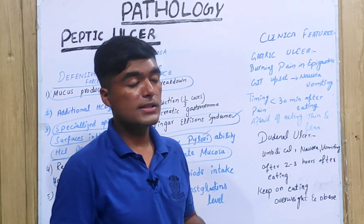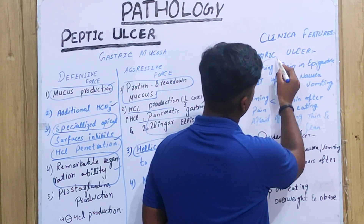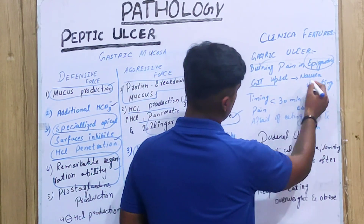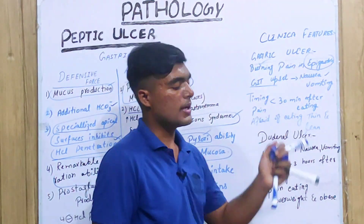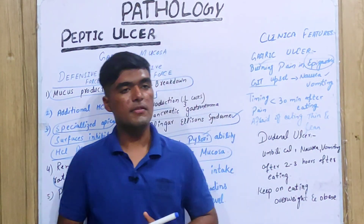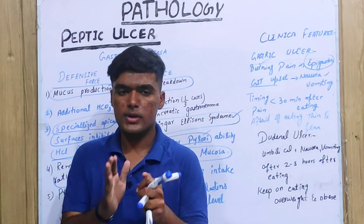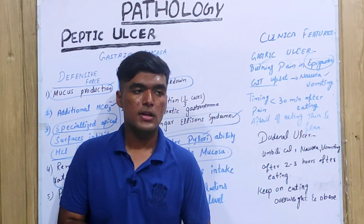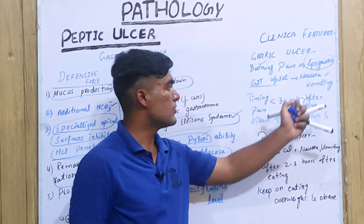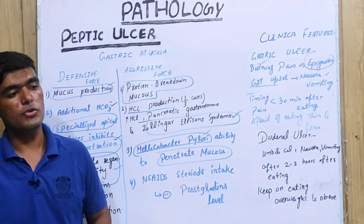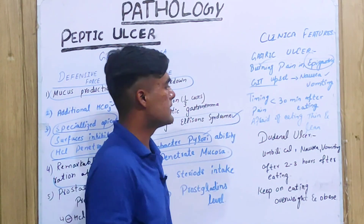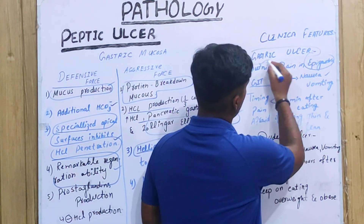Now let us look at the clinical features. First is gastric ulcer: burning pain in the epigastric region, GI upset, nausea and vomiting, with timing usually 30 minutes after eating. Such a person with gastric ulcer is very thin and lean because they are afraid of eating, since 30 minutes after eating they usually develop vomiting, so they tend not to eat.